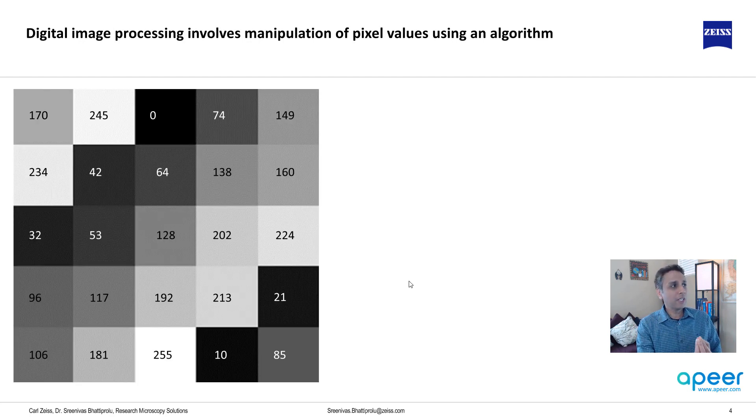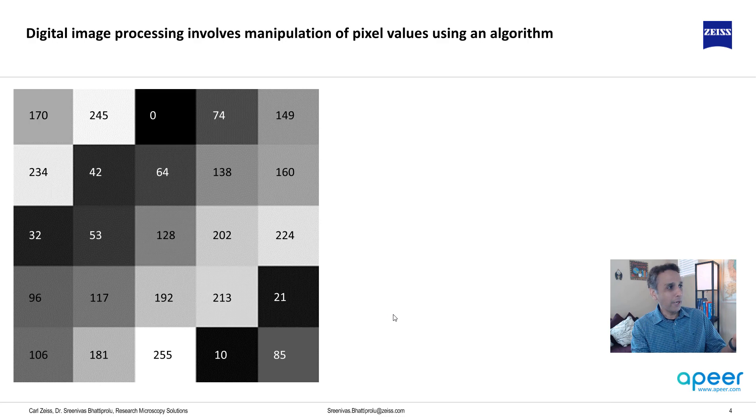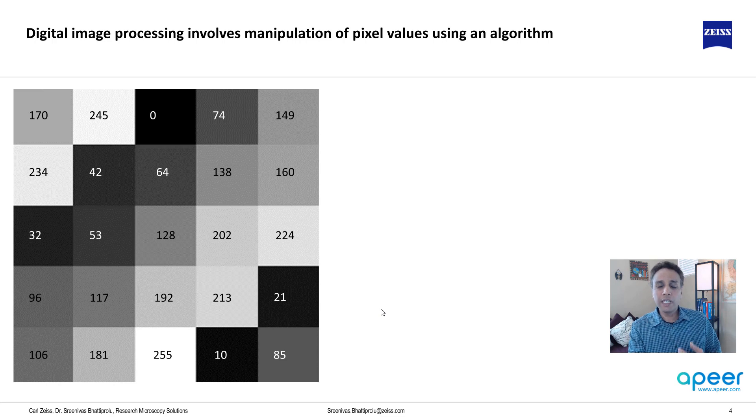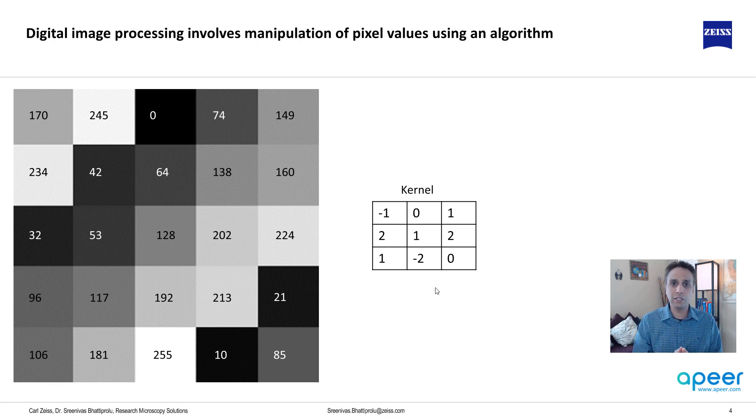So let me represent this one more way. So here, let's say you take a grid of these images, and when you perform digital image processing, what are you doing? You're actually manipulating these numbers by using an algorithm, and the algorithm can be linear, it can be non-linear. Let's not get into those discussions, but just to give you a quick example, let's say we want to apply a kernel.